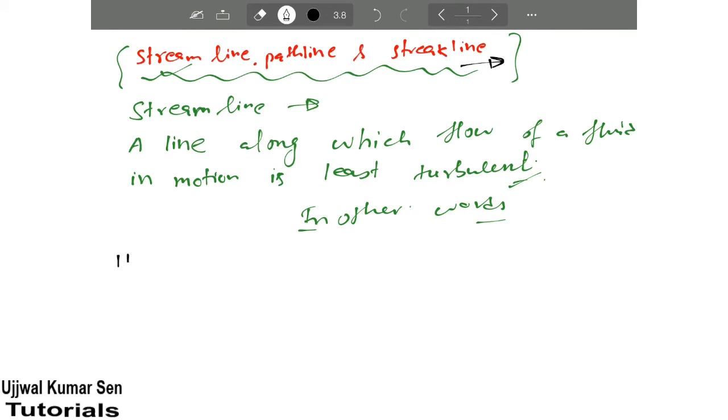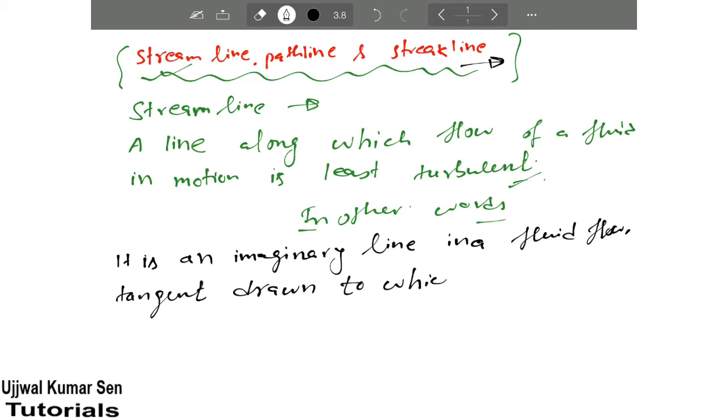It is an imaginary line in a fluid flow, tangent drawn to which at any point gives the direction of velocity at that point.